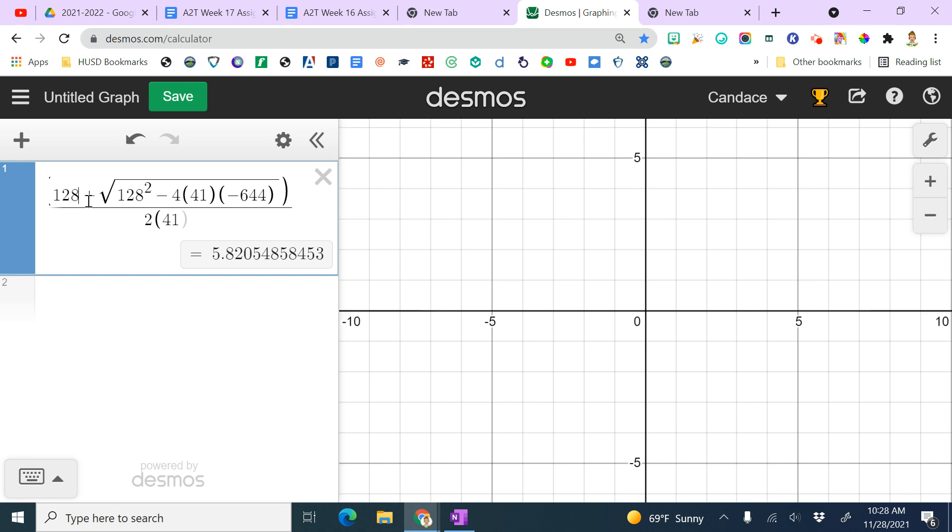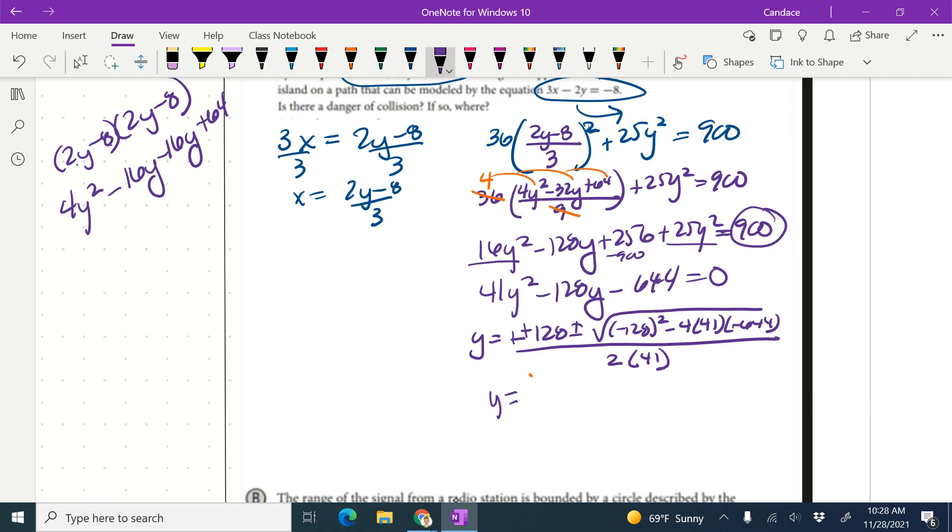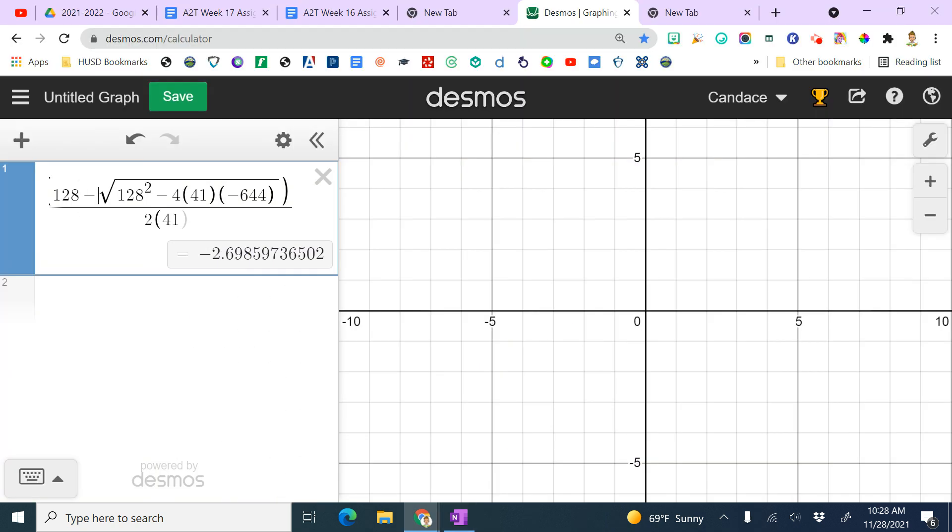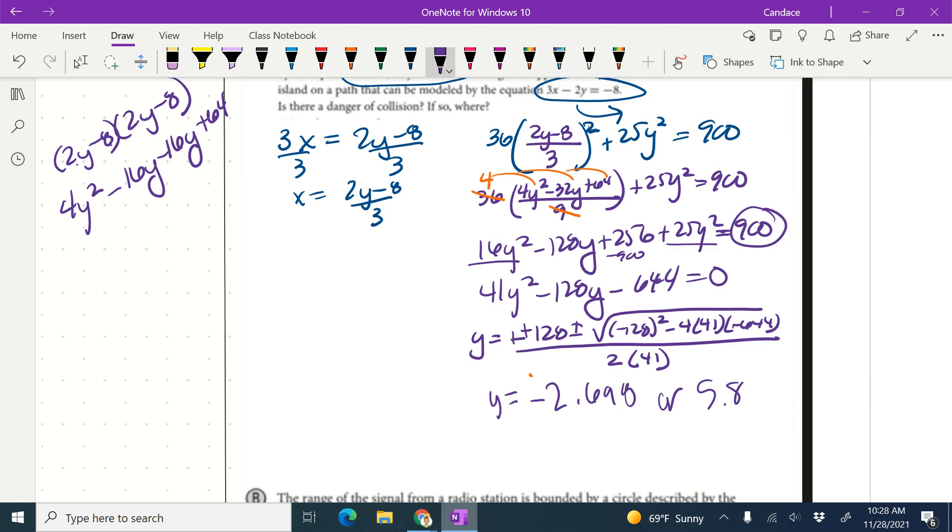Then I'm going to just simply, all I really have to do is just change that sign and I get my second answer of negative 2.698. So let's go ahead and write that down. So we know that y equals negative 2.698 or 5.821.